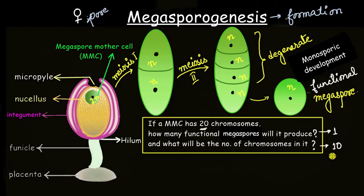That was all about how a megaspore is formed inside the ovule in an ovary. In our future video, we will talk about how this megaspore further divides and gives rise to female gametes.